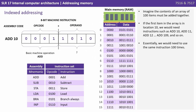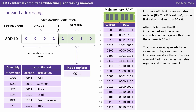Finally, indexed addressing. Imagine the contents of an array of 100 items must be added together. If the first item in the array is in location 10, we would need instructions such as ADD 10, ADD 11, ADD 12 all the way through to ADD 109. Essentially we would need to use the same instruction 100 times.